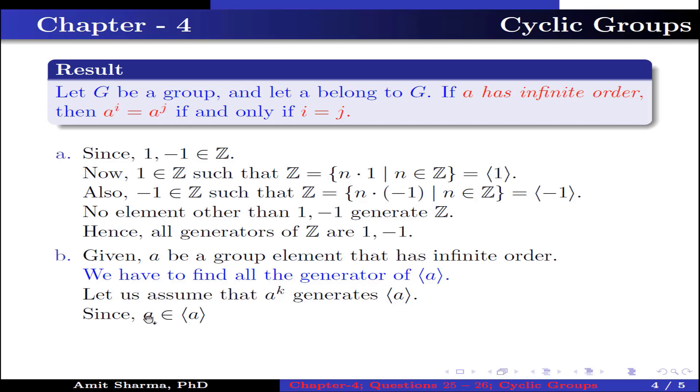Since a belongs to the group generated by a, this implies a can be written as (a^k)^m, which equals a^(km) where m belongs to Z.